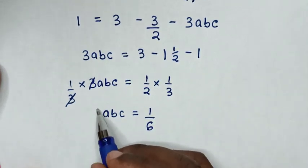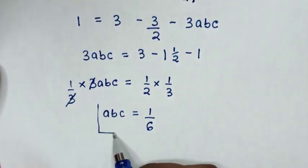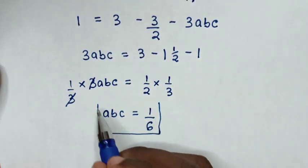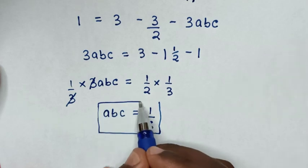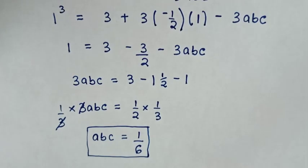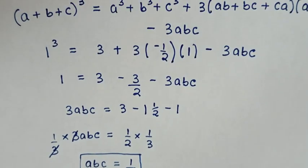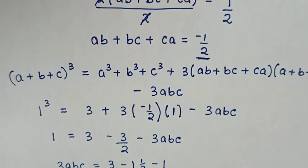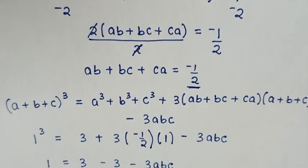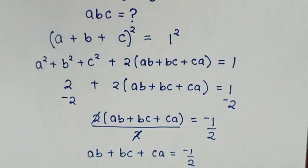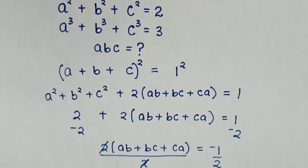Therefore, the final answer for the value of ABC is 1/6. Thank you for watching — don't forget to subscribe to my channel, and see you in the next video. Bye-bye!